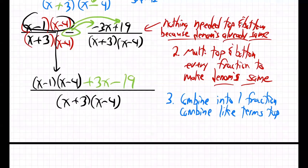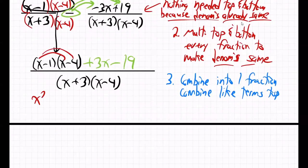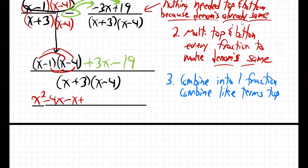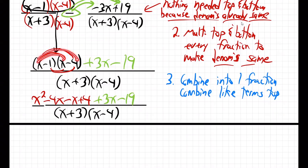We also need to multiply out the parentheses on the left numerator. So (x - 1)(x - 4) distributes to x squared minus 4x, and then minus x plus 4. Bringing it all together on top: x squared minus 4x, minus x plus 4, plus 3x minus 19, all over (x + 3)(x - 4).